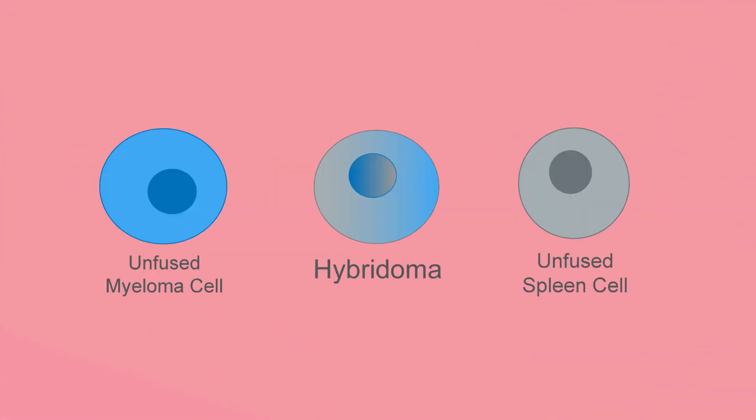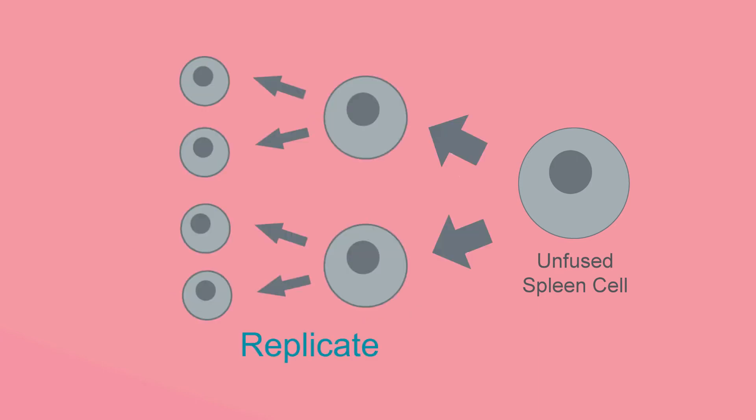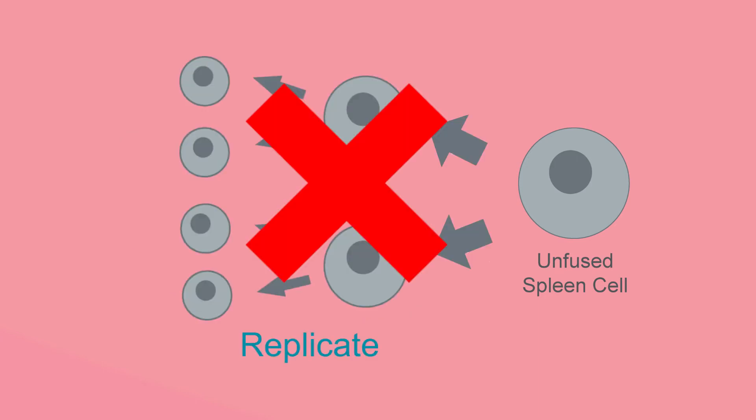During the fusion process, it is important to select for hybridomas over myeloma and spleen cells in order to maximize antibody yield. Spleen cells are easily selected against since they do not replicate in culture.